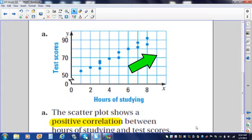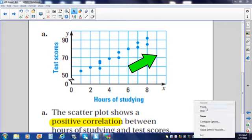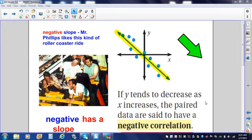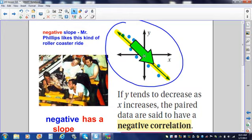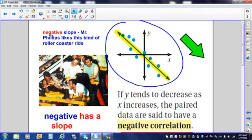This type of scatterplot has a negative correlation. If you would, please draw the coordinate grid on your paper and put your dots or your data points so they're all going down and to the right. Down and to the right. This scatterplot, as we said, has a negative correlation because they're all going down and to the right. That is like a negative slope. Like a negative slope. Mr. Phillips hates, I don't care what you say, he hates this kind of rollercoaster. Now, you may like it, but Mr. Phillips hates this kind of rollercoaster. So, negative correlation.